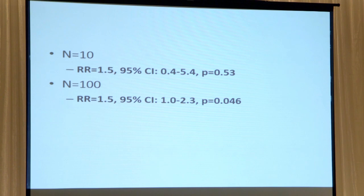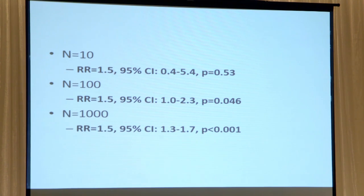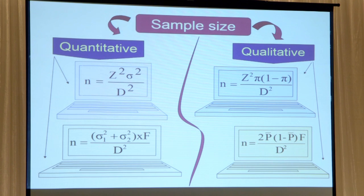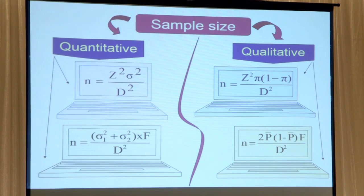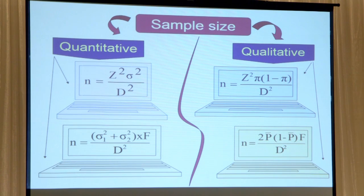To summarize, increasing N tightens the confidence interval and increases power. Switching to calculating sample sizes for different clinical scenarios, you need to figure out what you are testing before starting the trial. Is it qualitative data — does a person have GBM or not — or quantitative data like length of survival in months or days? That will dictate the type of formula and analysis needed. Here are four simple formulas for qualitative and quantitative data.